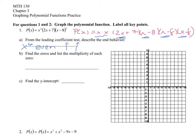Now that I have it expanded, I'm going to set each factor equal to zero and solve. I get X equals zero twice — for even multiplicities, it bounces off the point. Then I get X equals negative 7 halves one time. X equals 8 three times. For odd multiplicities, it will just cross through the point — you won't see any bouncing.